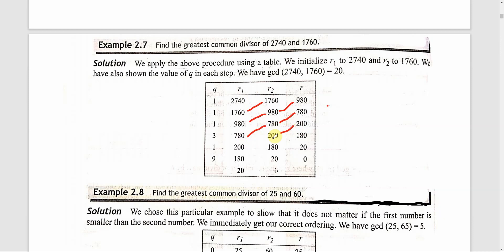Now we divide again. 780 divided by 200: the quotient is 3 and the remainder is 180. That is, 200 times 3 equals 600, and 780 minus 600 gives remainder 180.